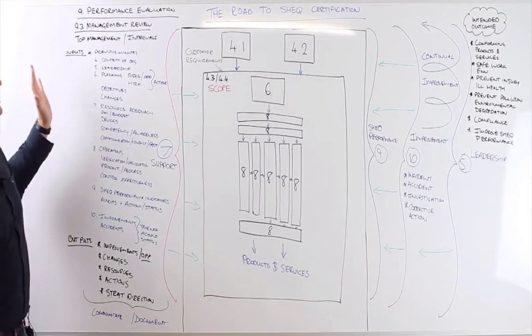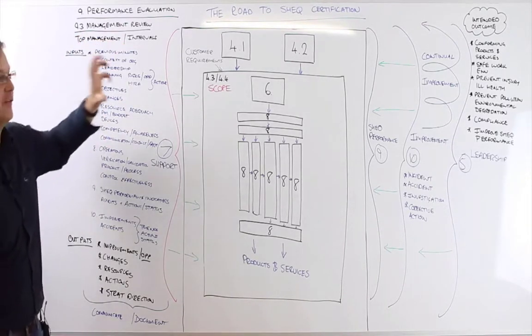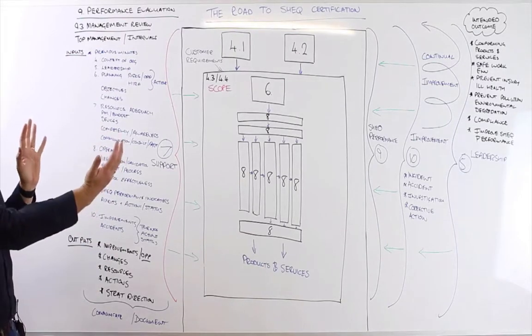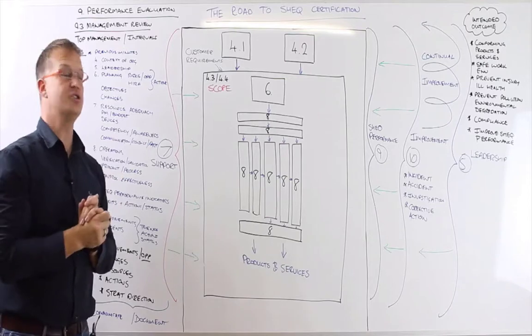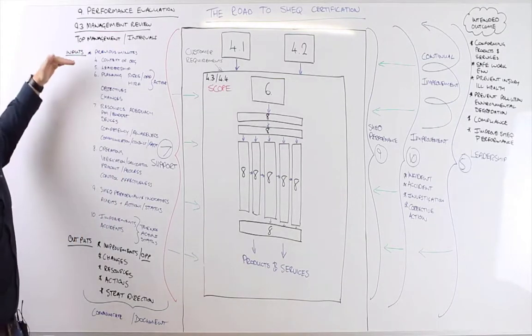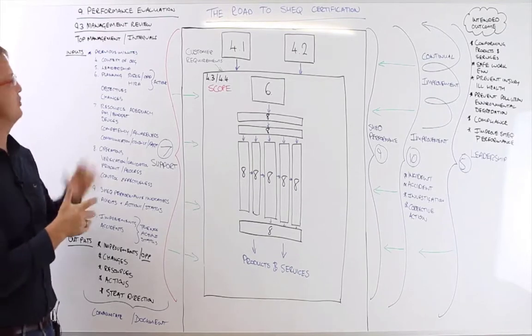Now, when we plan that management review, we obviously want to have a schedule, we could have an agenda, we could have a management review presentation, which is all the SHE indicators and performance, which we can then show to management. Let's have a look at some of the inputs that we would want to put into that presentation to show top management.